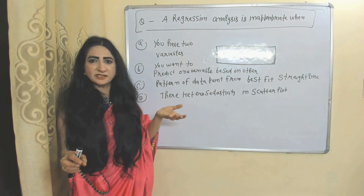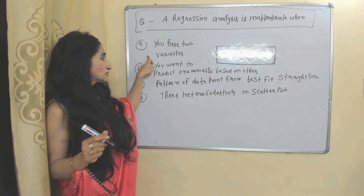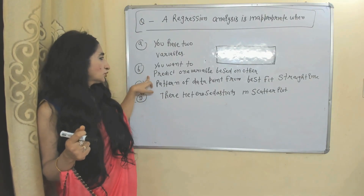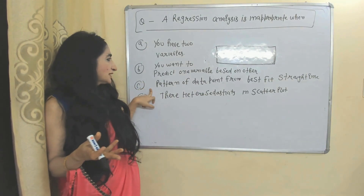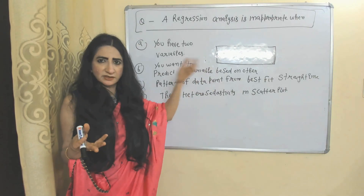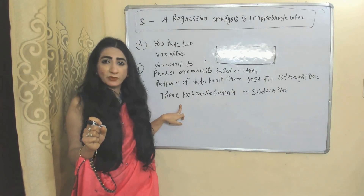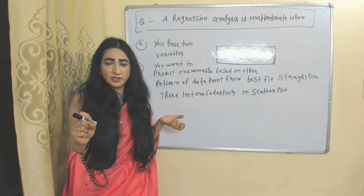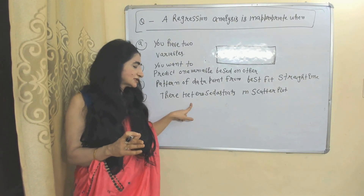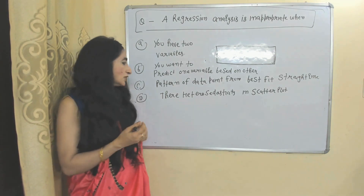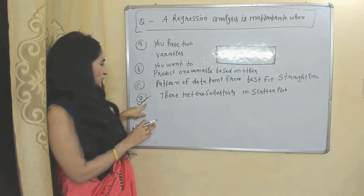MCQ Question 5: Regression analysis is inappropriate when — which condition applies? Using two variables to predict one from the other is appropriate. Finding a best-fit line from a data pattern is also appropriate. However, the presence of heteroscedasticity in the scatter plot makes regression analysis inappropriate because heteroscedasticity violates the homoscedasticity assumption of the regression model. The correct answer is D.